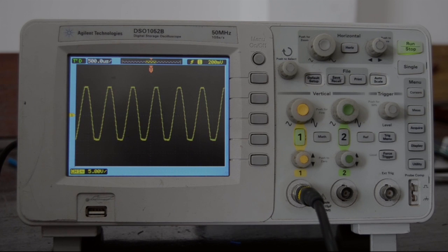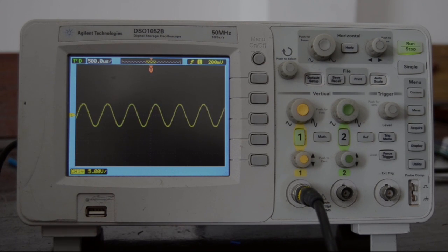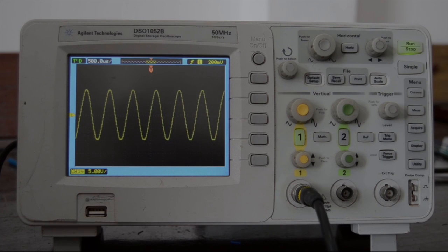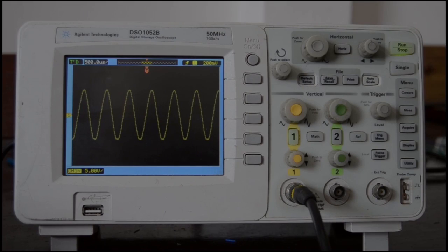By varying the potentiometer, we obtain the wave. Now we have obtained the sine wave on the screen. Let's measure the amplitude and frequency.